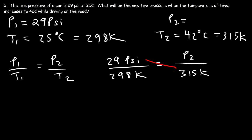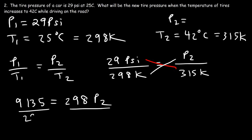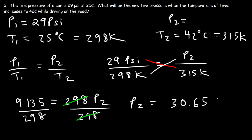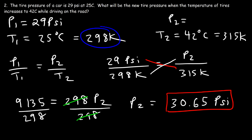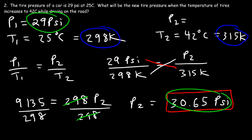Using P₁/T₁ = P₂/T₂ with P₁ = 29 psi, T₁ = 298 K, T₂ = 315 K, cross-multiplying gives 29 × 315 = 9,135 = 298 × P₂. Dividing both sides by 298: P₂ = 9,135 ÷ 298 = 30.65 psi. The pressure increased from 29 psi to 30.65 psi as temperature rose from 298 K to 315 K, consistent with Gay-Lussac's Law.